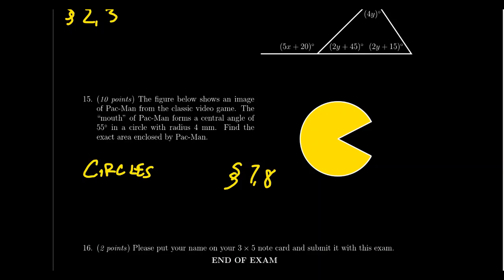Question number 16 is a reminder to turn in your note card. Put your name on it, since note cards can get detached from the test by mistake. Having your name on it ensures you get the 2-point credit. That gets us through the exam. I would recommend taking a look at the practice exam and trying the problems on your own — solutions are attached.